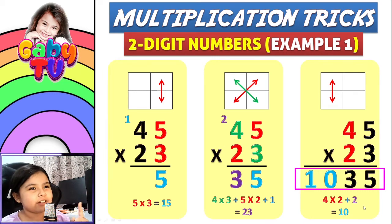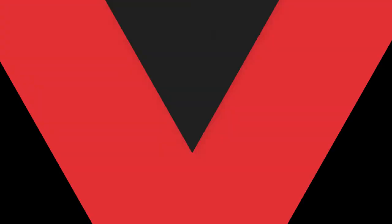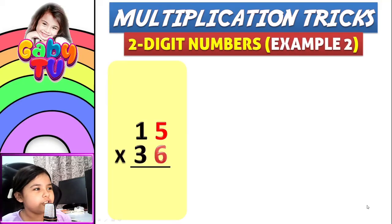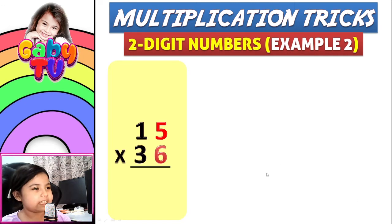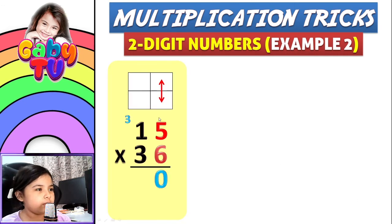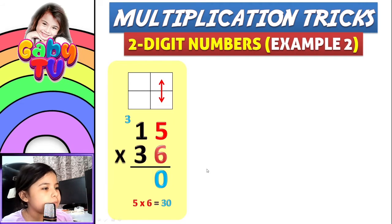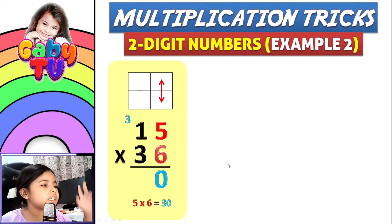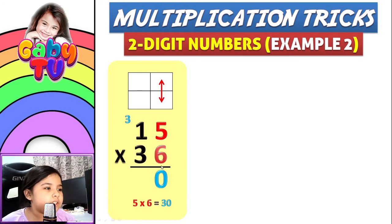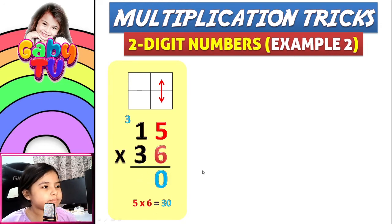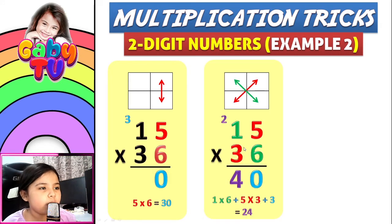Now let's go to example two: 15 times 36. Again you have to do the red numbers, so five times six equals 30. We have to put the zero here and put the three here. Next, we have to multiply one times six plus...